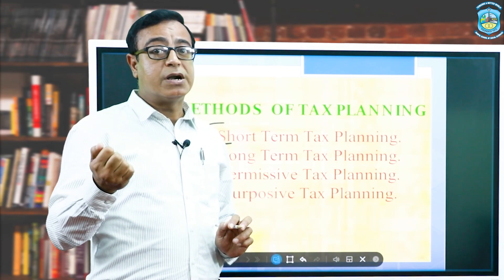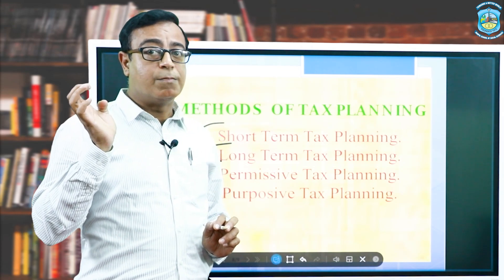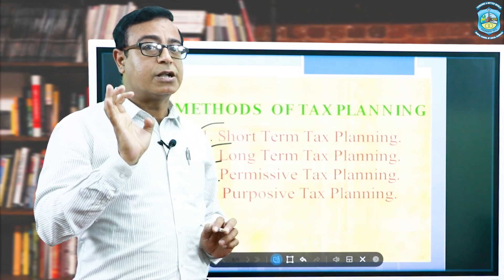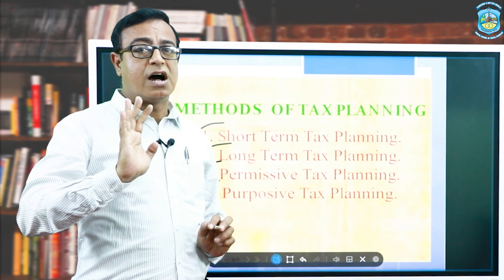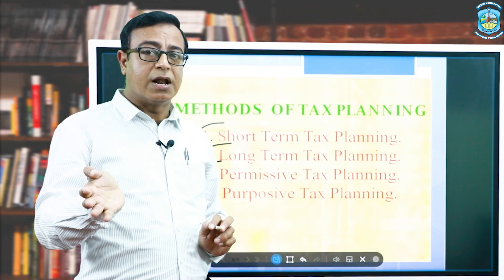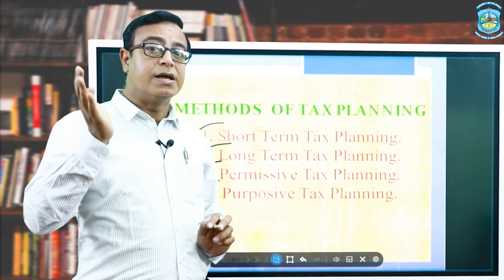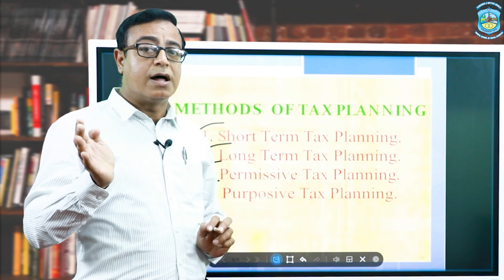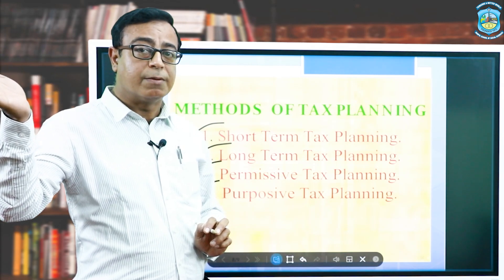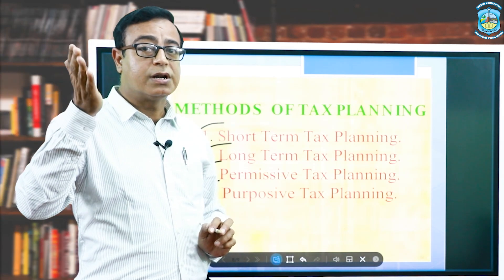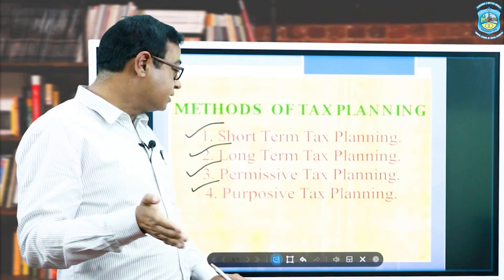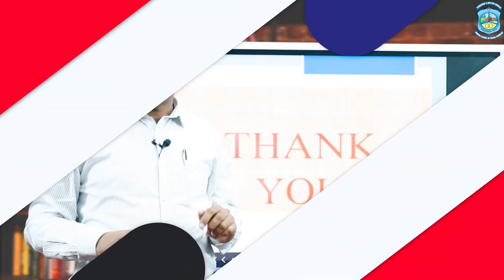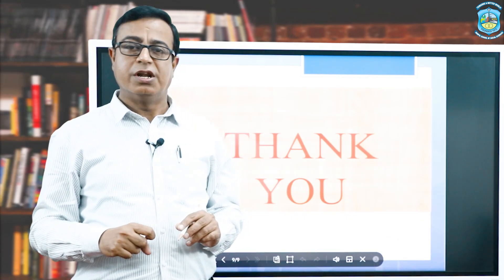The last method is purposive or objective-based tax planning. Here we have a specific objective or aim, and we structure our tax planning to achieve that goal. For example, if the aim is to save money for retirement life, tax planning is made according to that particular purpose. This is known as purposive or objective-based tax planning.